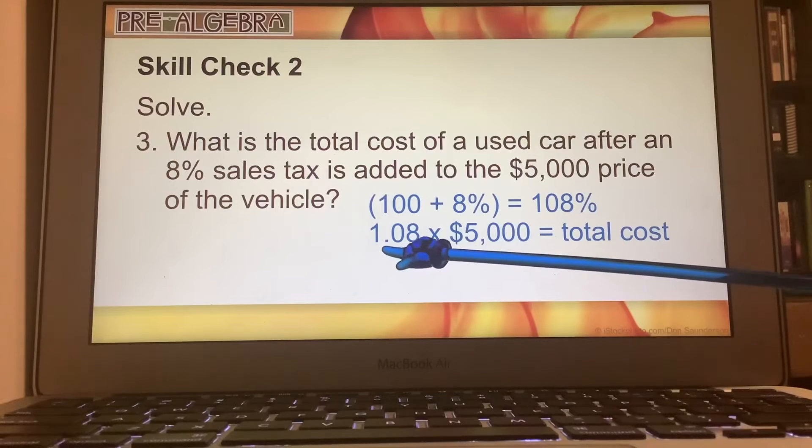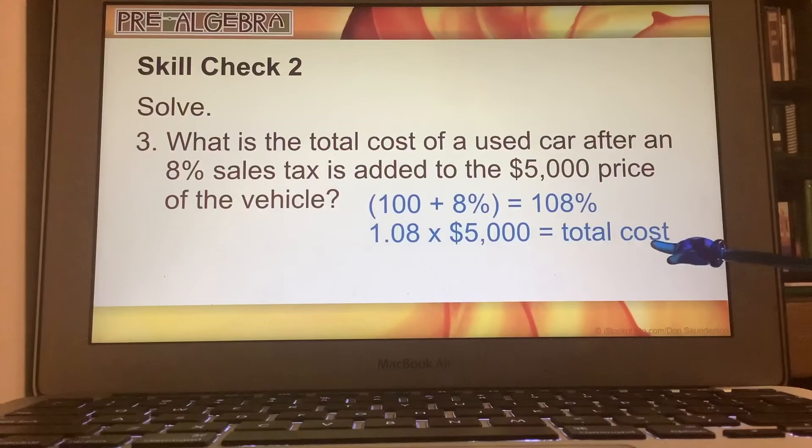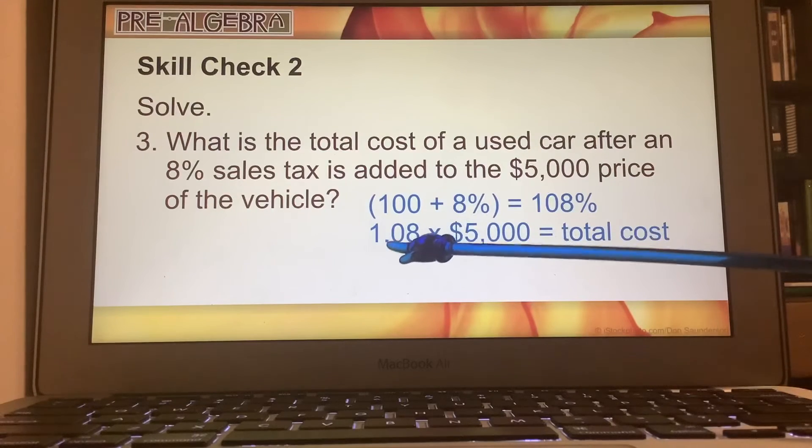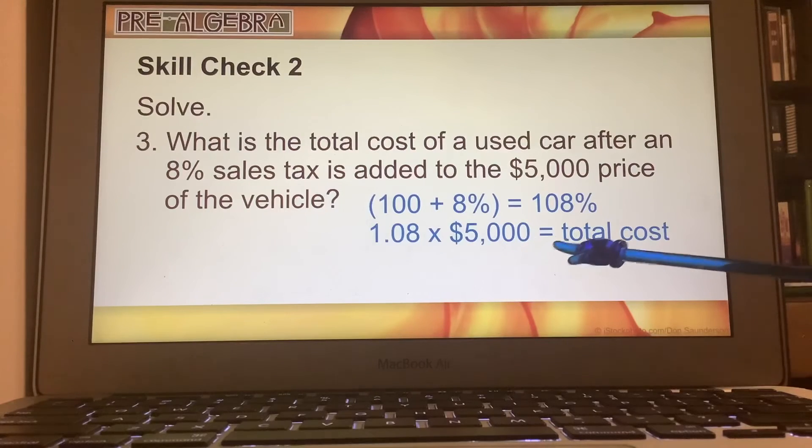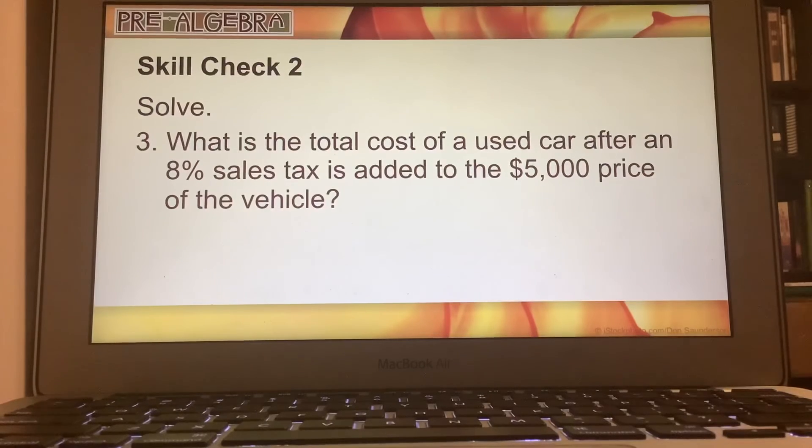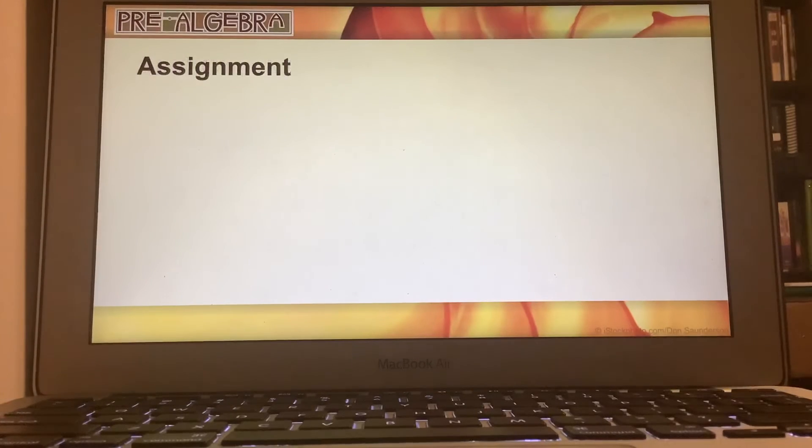So our percent is going to be 100 plus 8% and we get 108%. Then we multiply because that's 108% of the price of the vehicle, $5,000 is going to give us the total cost. So 108% of the original price, $5,000 equals the total cost. $5,000 is the total cost of the used car.